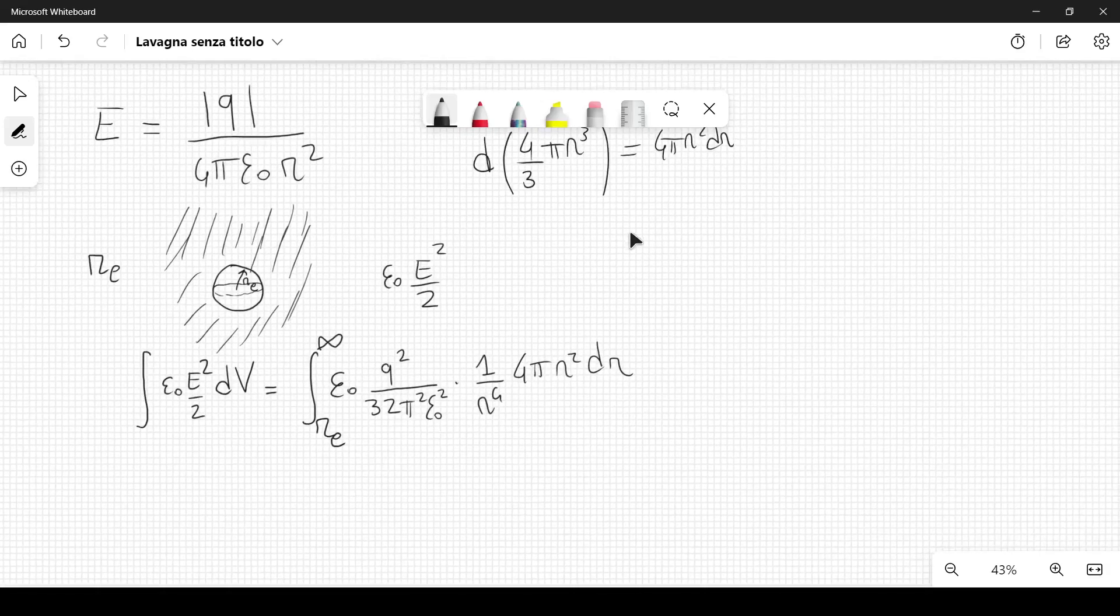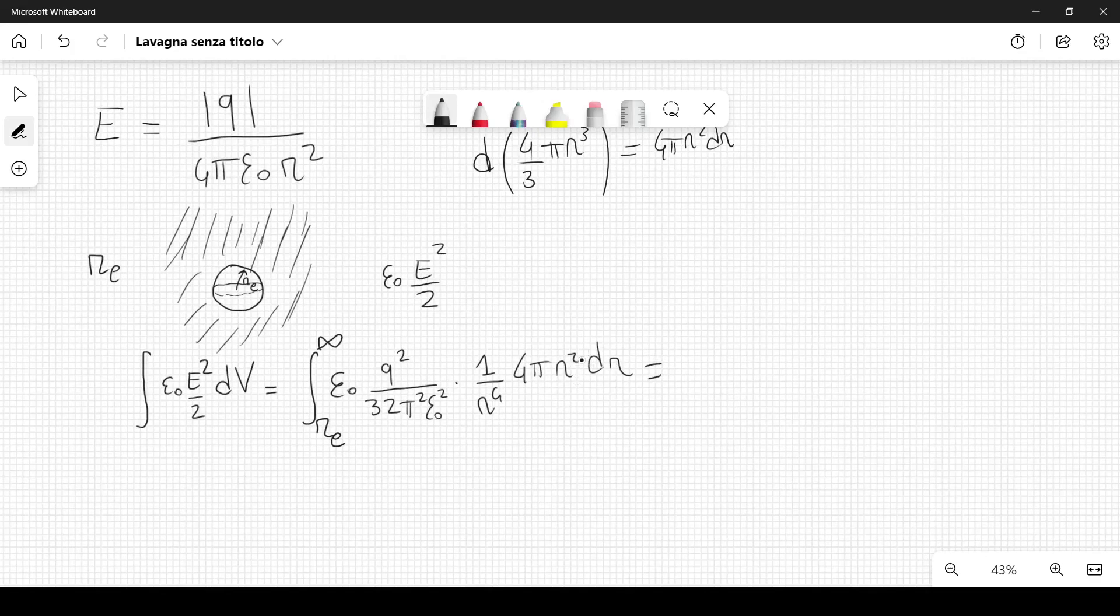So this is a simple integral to carry out. Basically it's the integral of a constant times 1 over r squared. And what you get is q squared divided by 8 pi epsilon 0 times 1 over r e.